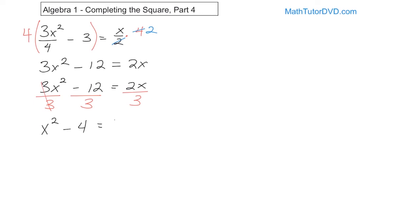On the right-hand side it's now 2x over 3, and we can't cancel anything there. But we now have a coefficient of 1 in front of x squared. I want the x term right behind the x squared term and the constant to go to the other side. So I'll add 4 to both sides and subtract 2x over 3 from both sides at the same time. That gives me x squared minus 2x over 3 equals positive 4.